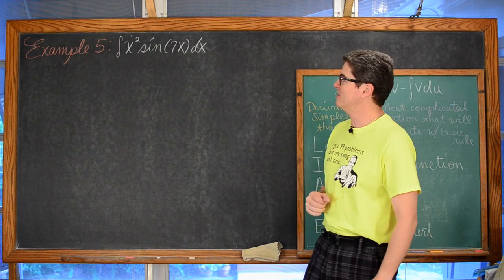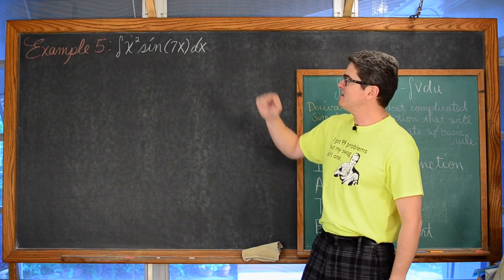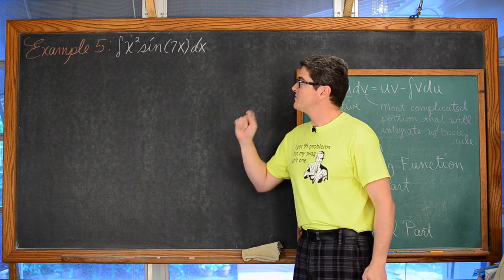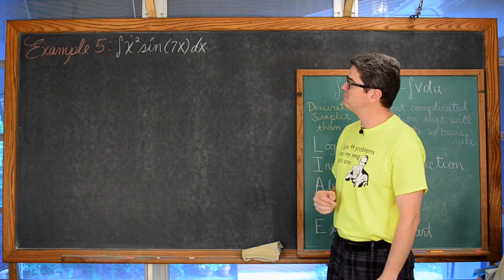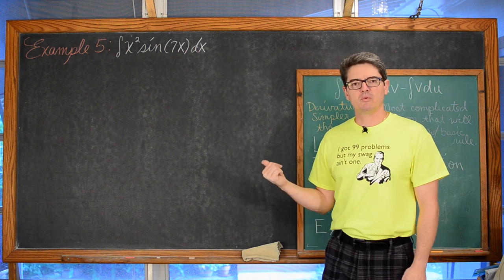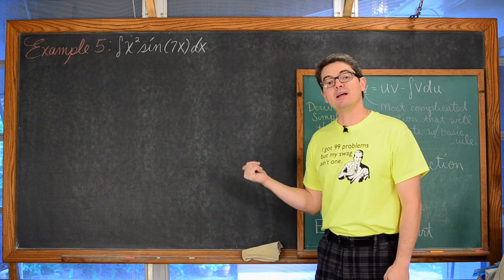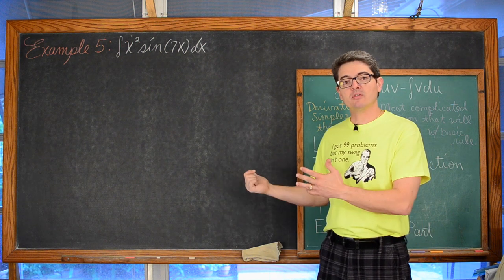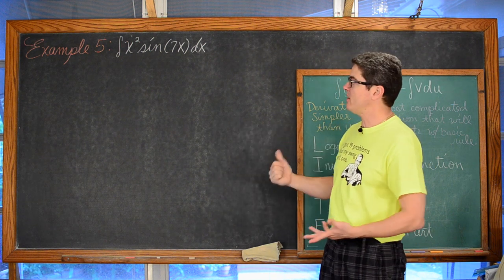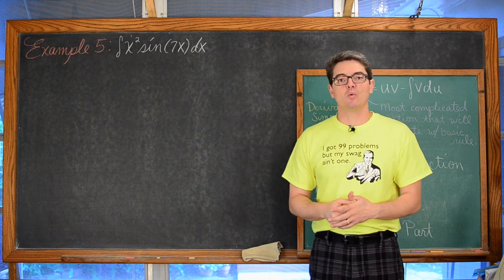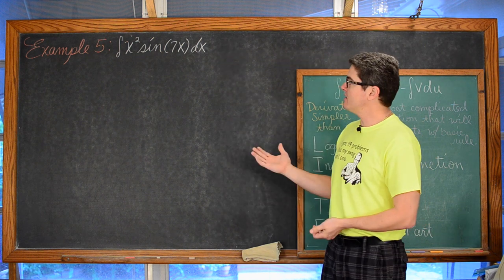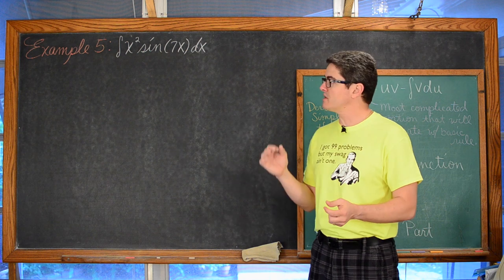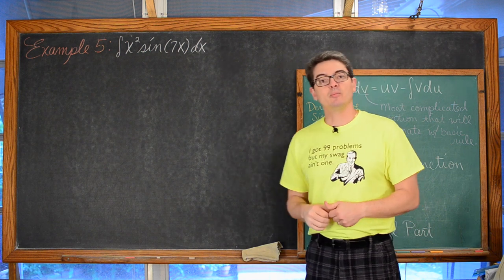Example number 5: find the indefinite integral of x squared times sine of 7x dx. We should be able to do this already — it looks a lot like example number 3. Pause the video and give it a shot. I will reveal the solution one step at a time. Is this exactly like number 3, or is it a little different?